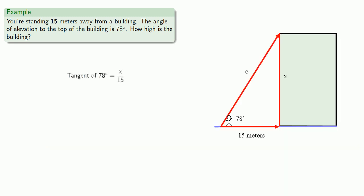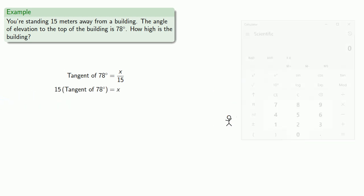So we have tangent 78 degrees, opposite over adjacent. We'll solve for x. We'll use our calculator.